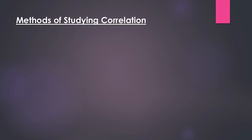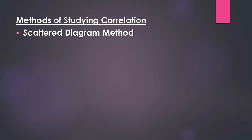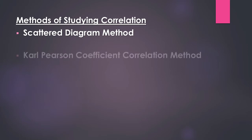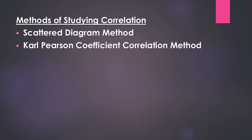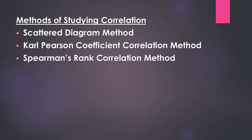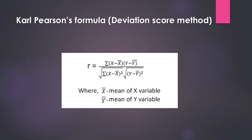Correlation can be studied through three different methods: the first is the scatter diagram method, the second is the Pearson coefficient correlation method, and the third is the Spearman rank correlation method. The scatter diagram is a graphical representation of data where variables are plotted graphically, as described in a previous video. The Pearson coefficient correlation method uses a specific formula.